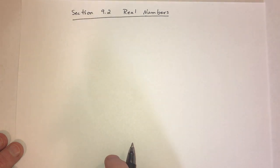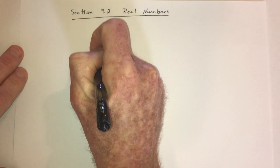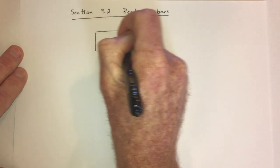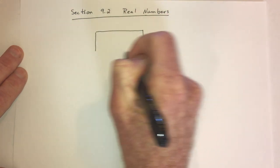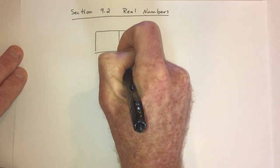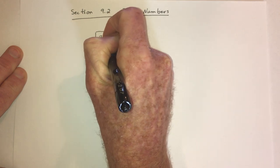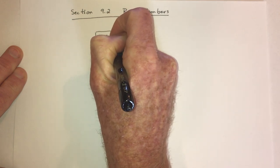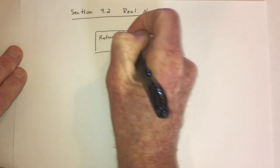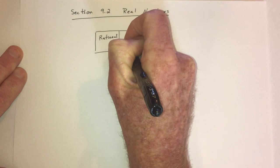For section 9.2 on real numbers. The real numbers include the rational numbers and the irrational numbers.